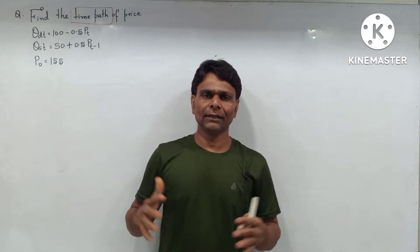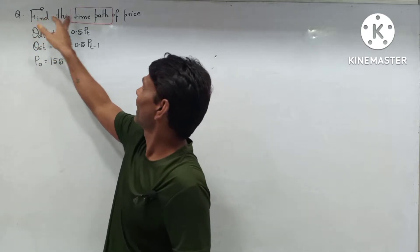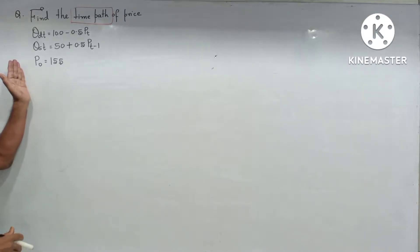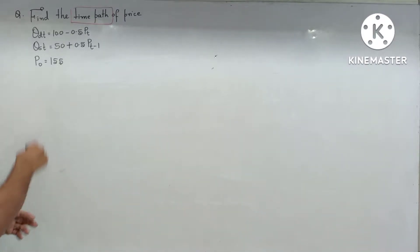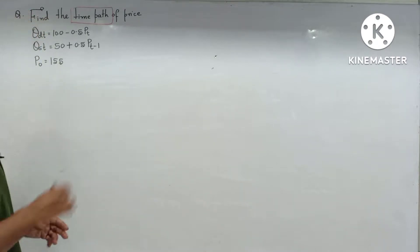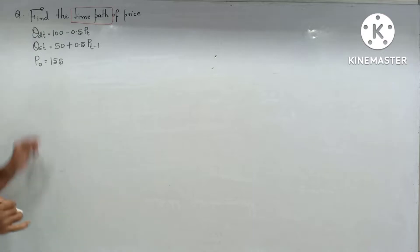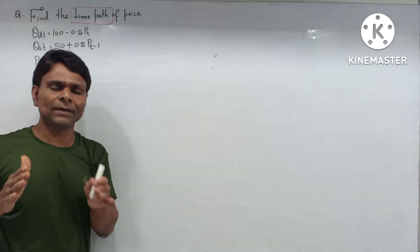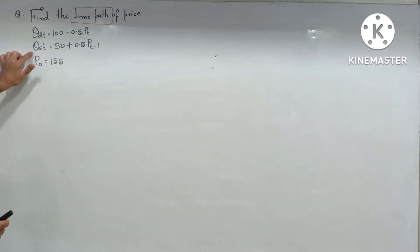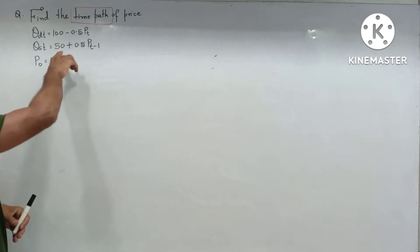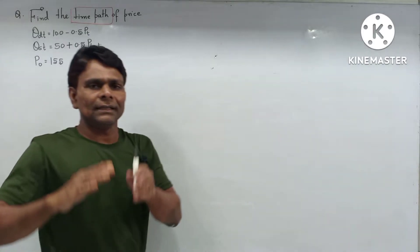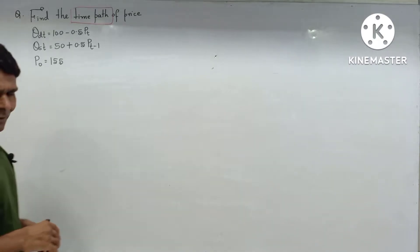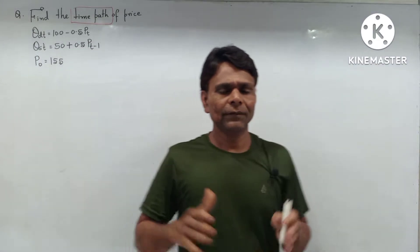Hello friend. In this video I will discuss the calculation of time path of price with given demand and supply functions along with initial condition. The question asks to find the time path of price. The demand function is q_d(t) = 100 - 0.5·p(t), the supply function is q_s(t) = 50 + 0.5·p(t-1), that is price at the previous period, and the initial condition p(0) = 155.